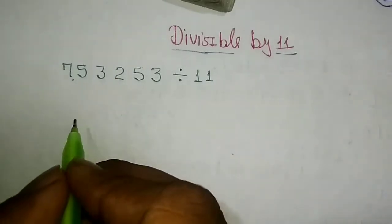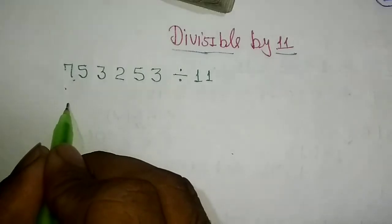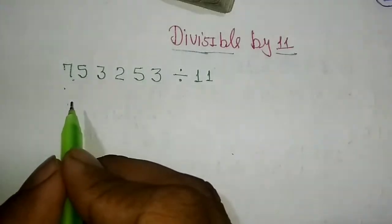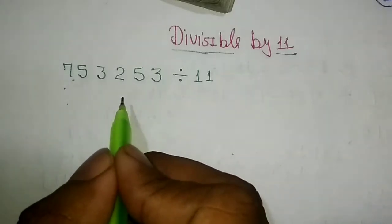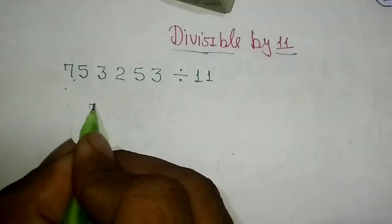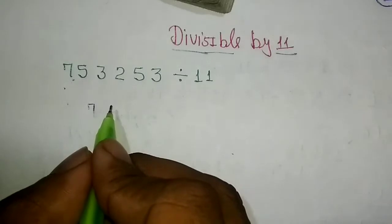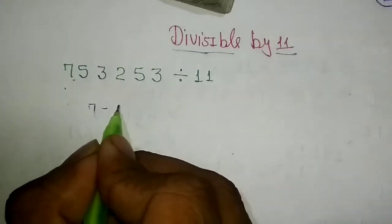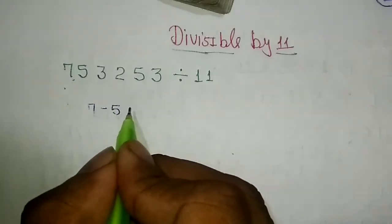The trick is: starting from the first digit on the left, you want to subtract and add every other digit in the number. The first digit is 7, so we will subtract the next digit 5, and add the next digit 3.